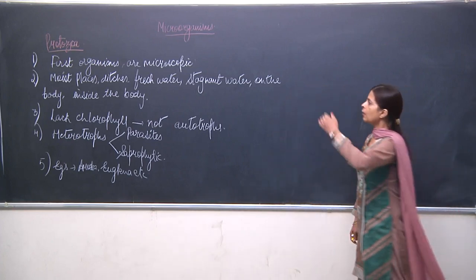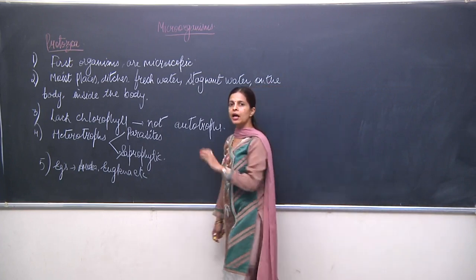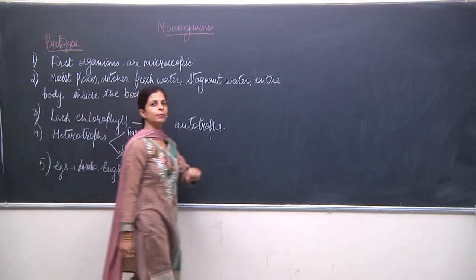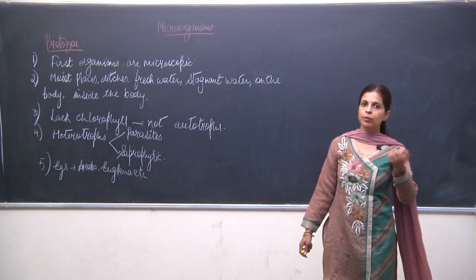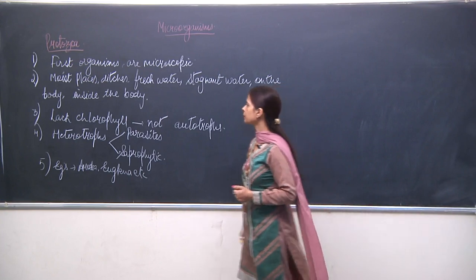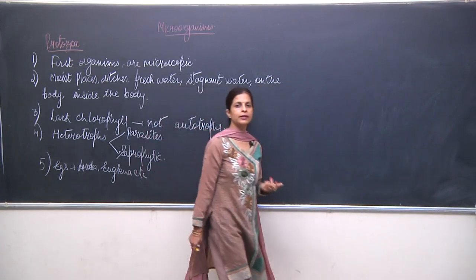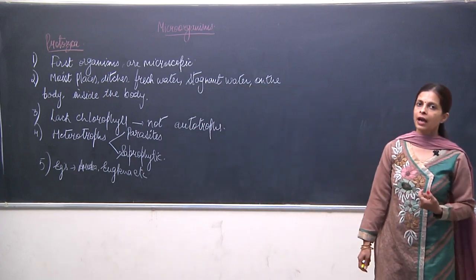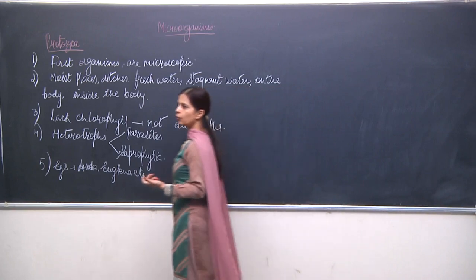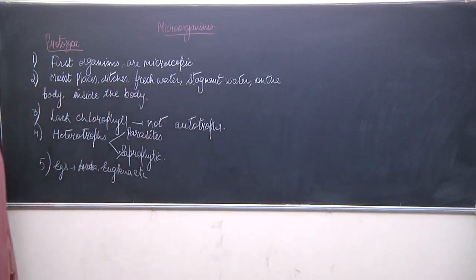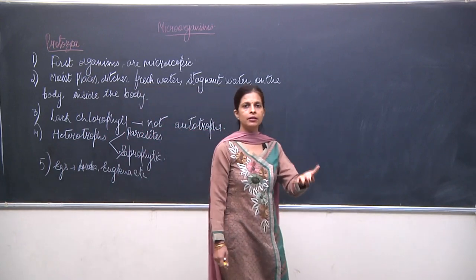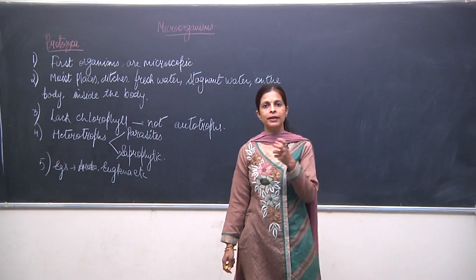Protozoans are the first organisms. They are found everywhere — in moist soil, in the body, in fresh water, in stagnant water. They do not have chlorophyll, so they are not in the category of plants. They cannot make their own food and must depend on other organisms. They can follow parasitic mode of nutrition or saprophytic mode, feeding on dead and decaying matter.